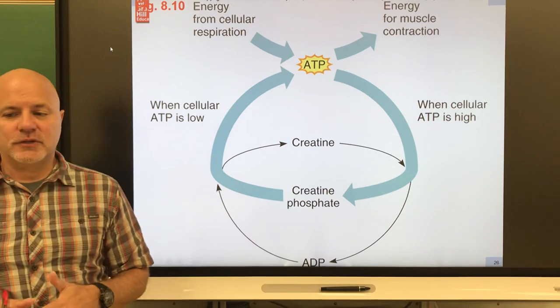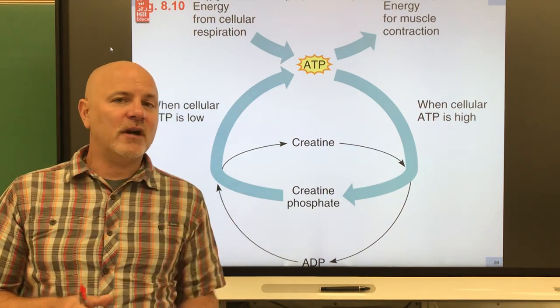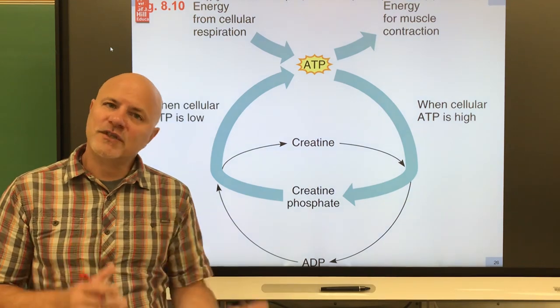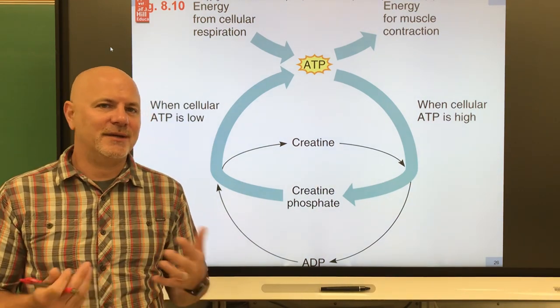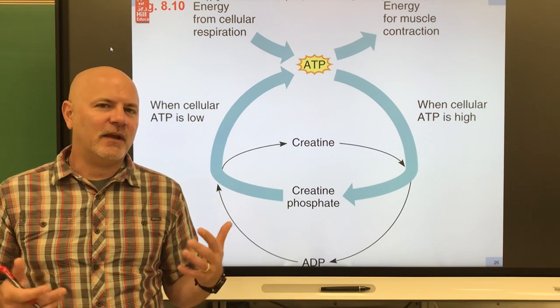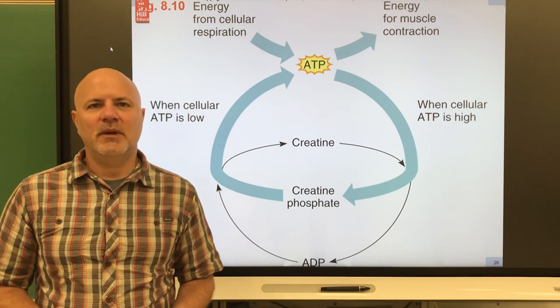Okay, let's take a look at energy sources for contraction. One of our energy sources for contraction is stored ATP in the muscle cell. Now we don't store a whole lot of ATP in the muscle cell because ATP isn't a super stable molecule, so we only have like a few seconds worth of stored ATP, like four to six seconds.